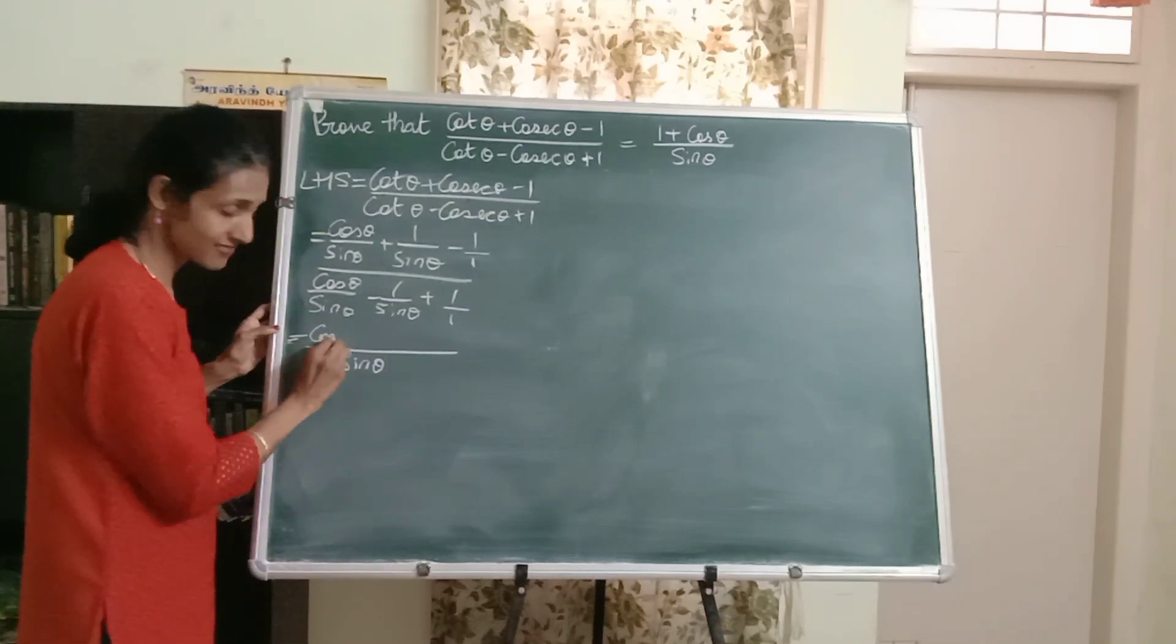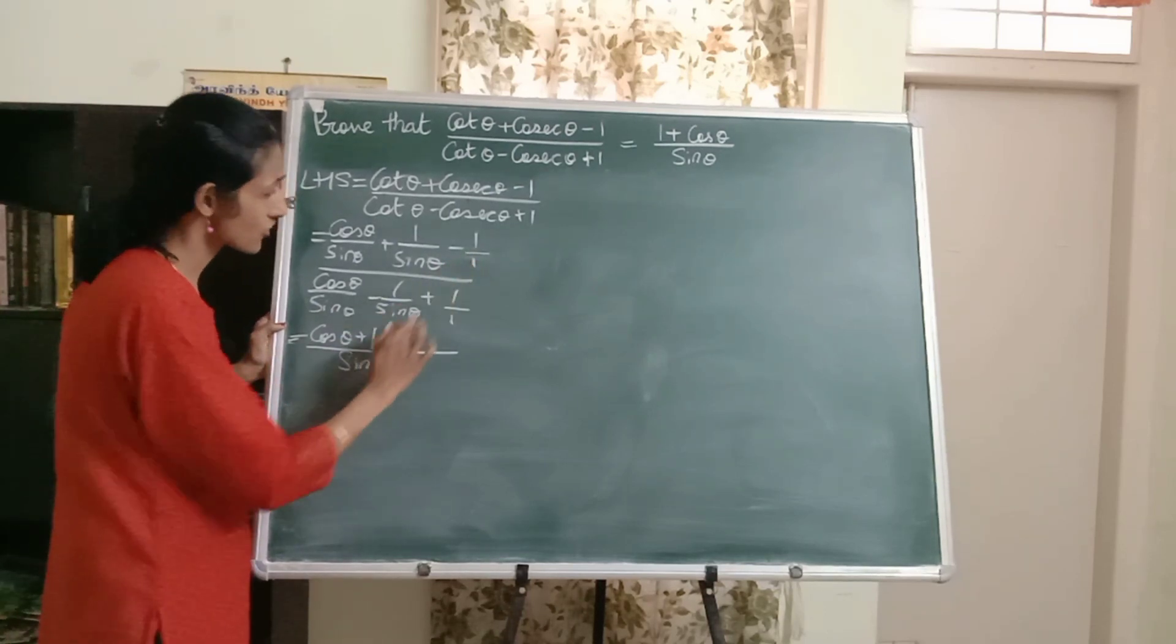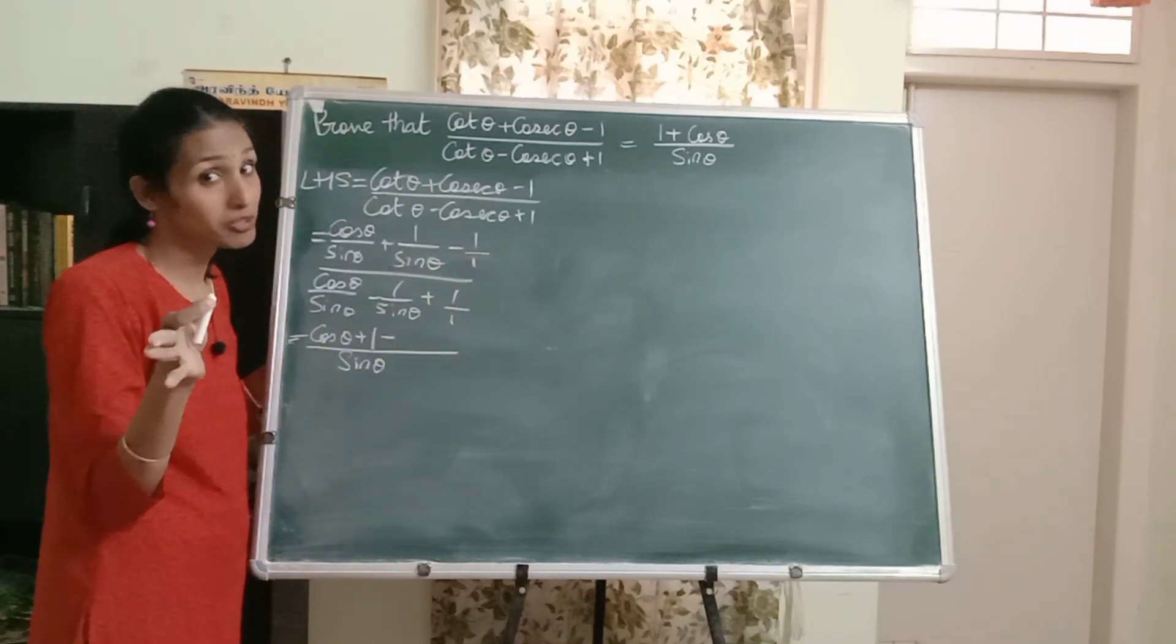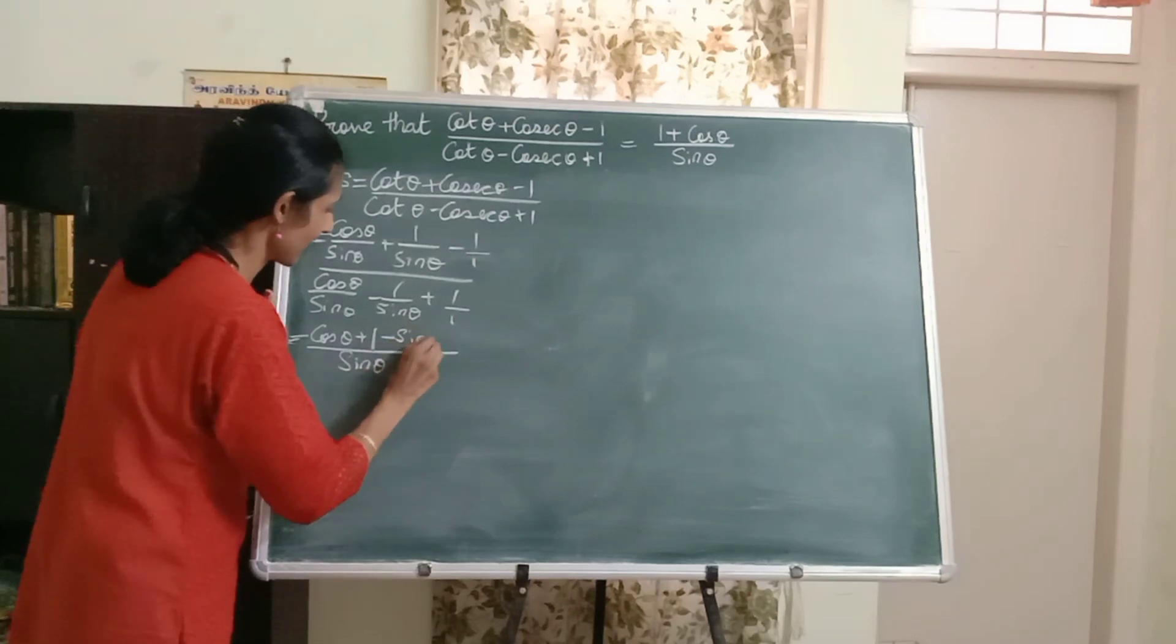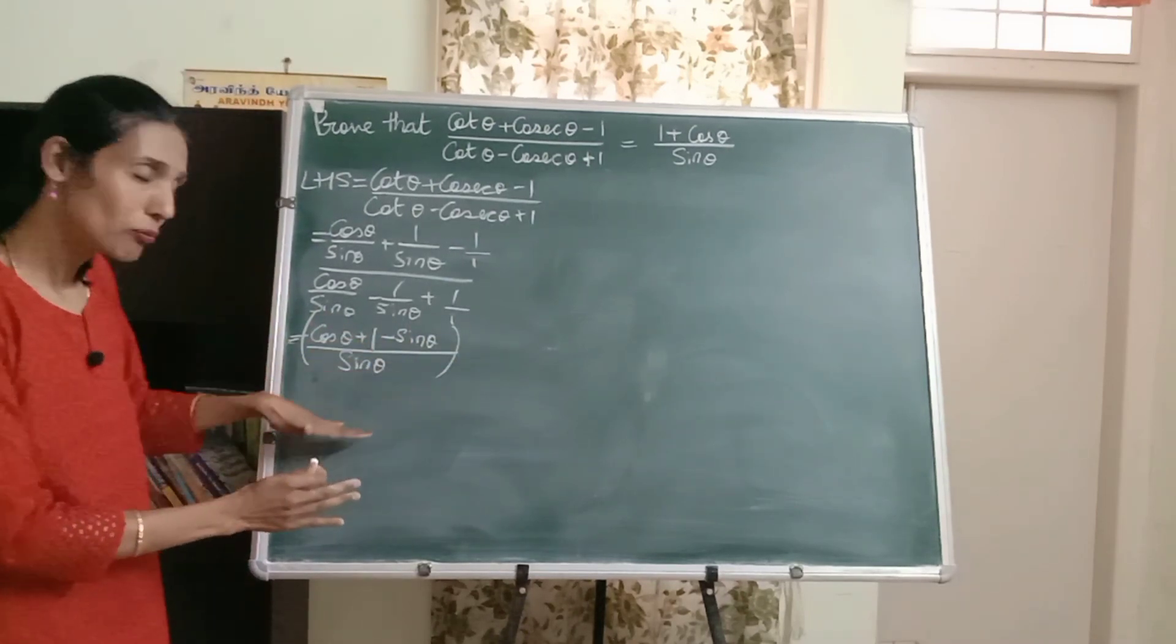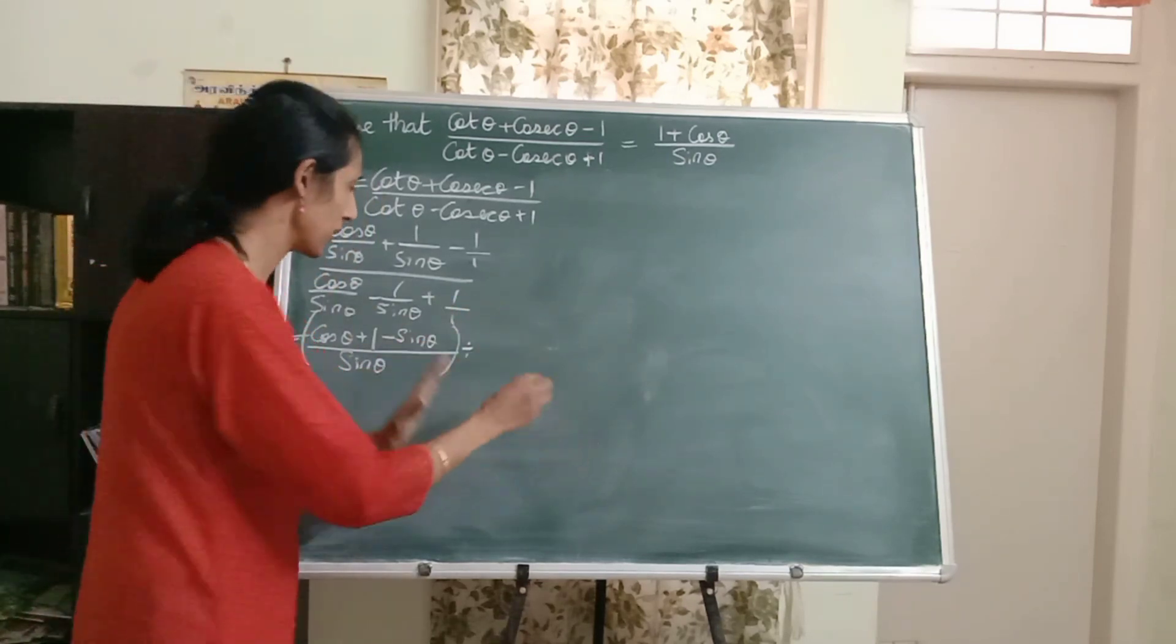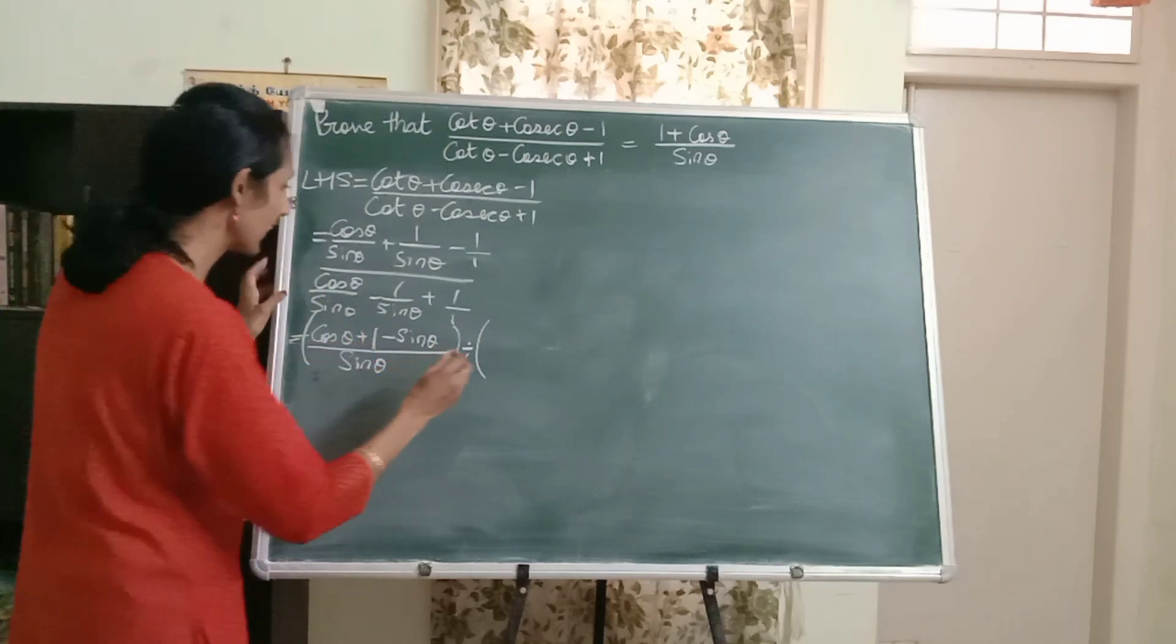So here the denominator is same, so I'll get cos theta plus 1. Here the denominator is 1, so I need to multiply the numerator by sine theta. Now this is the numerator. Now instead of writing the denominator down, I'll just write division sign and then write the denominator. It makes things look easier.